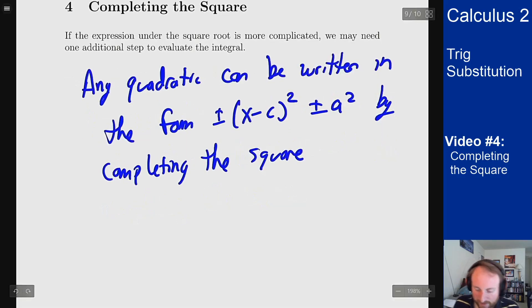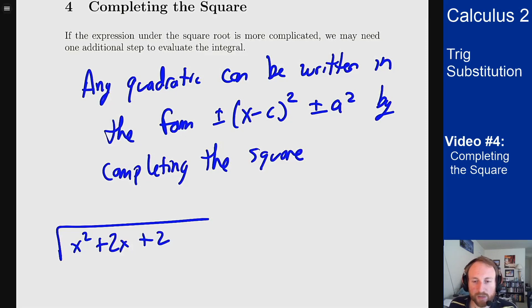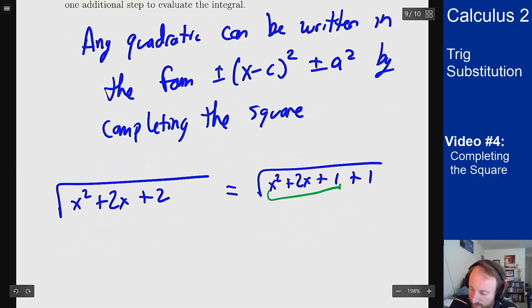An example of that to think about at first is something like x squared plus 2x plus 2. That's a quadratic but there's no easy way to use trig sub at this point because I don't really have it in the right form to deal with it. Well what can I do? Well I can rewrite this as x squared plus 2x plus 1 plus 1 and now this here is a perfect square. So this is the square root of x plus 1 squared plus 1.